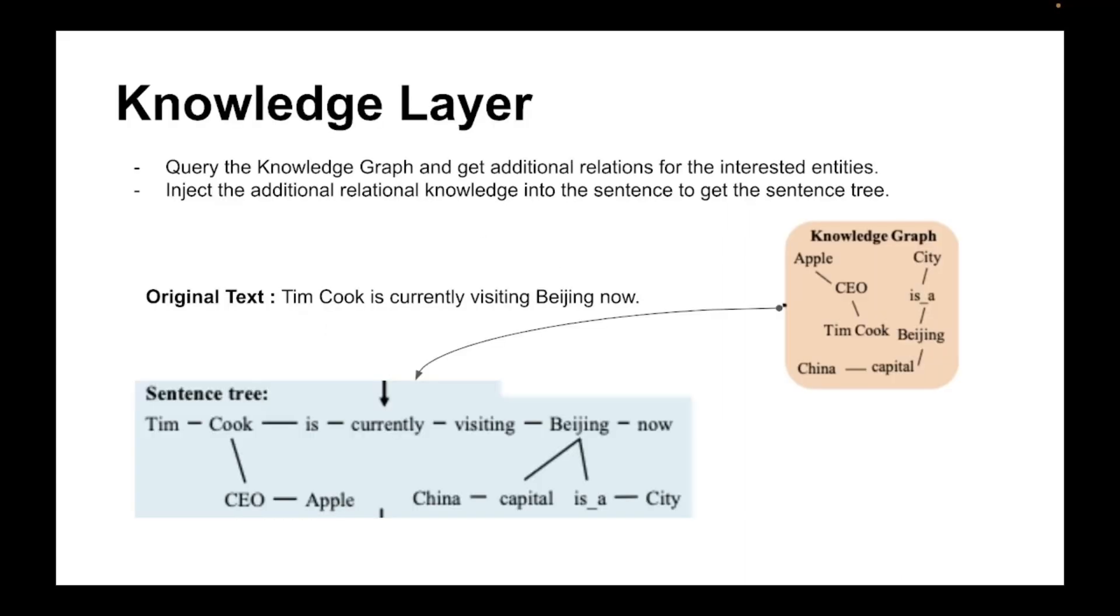First, the knowledge layer. So imagine this is the knowledge graph. We have nodes here like Apple and Tim Cook and they're connected by some relationship. So here Tim Cook is the CEO of Apple, Beijing is the capital of China, things like that. Let's say this is our original text: Tim Cook is currently visiting Beijing now. So the idea is to take this text and add additional knowledge to this text from the knowledge graph.